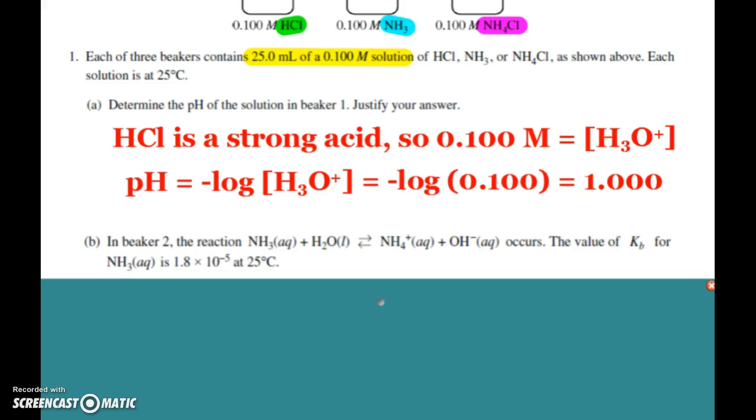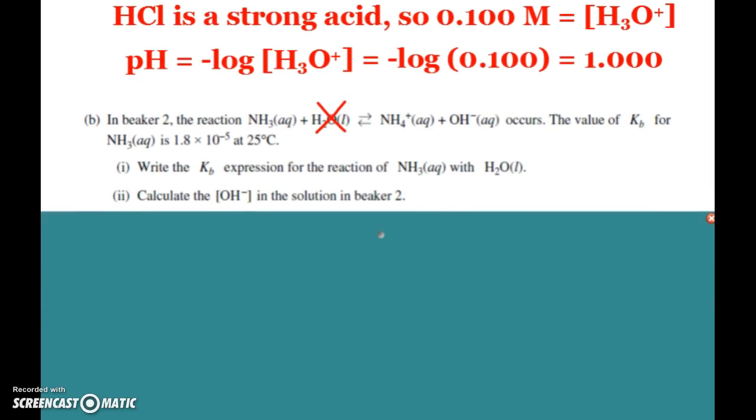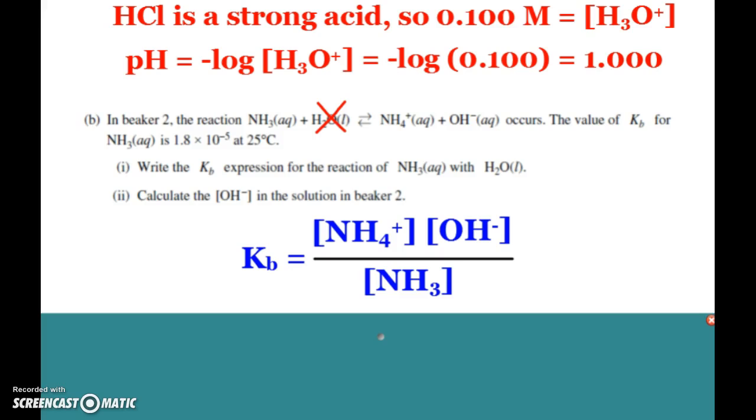It gives us the value of Kb for our ammonia to be 1.8 × 10^-5 at our magic 25 degrees Celsius. So first up I want you to write the Kb expression for the reaction and then calculate the hydroxide concentration. The reaction is right there, and you just need to write the Kb expression. Remember that water will not be included in our expression.